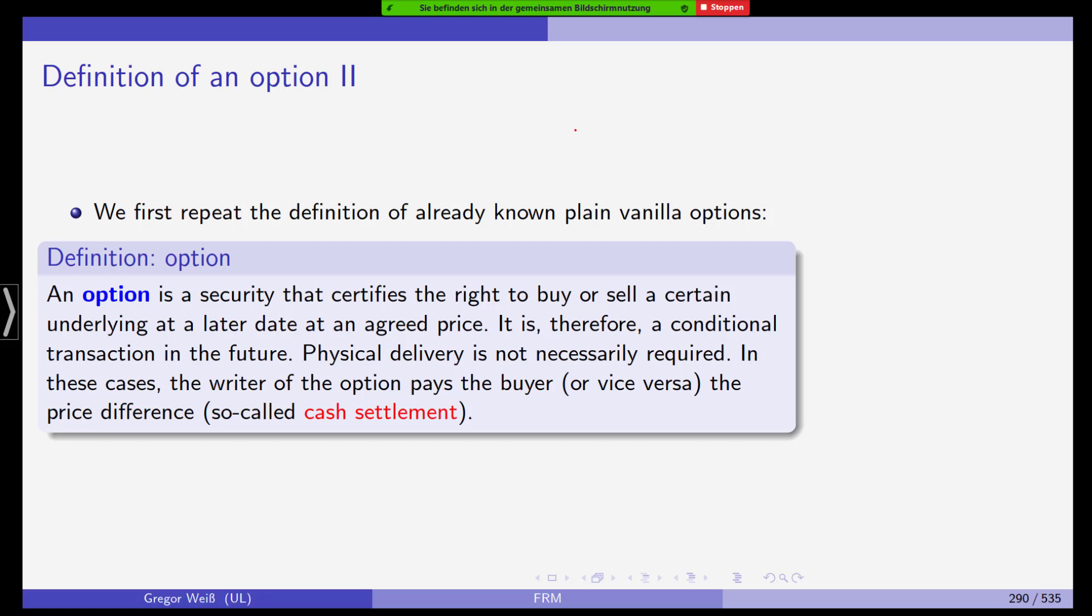Now, what is an option? We first repeat the definition. An option is a security that certifies the right to buy or sell a certain underlying at a later date at an agreed price. Thus, it's a conditional transaction in the future. It depends on whether you want to exercise your option. And physical settlement is usually not required. In most cases, rather than physical settlement, we have so-called cash settlement, when the writer of the option pays the buyer, or vice versa, the difference in price at maturity when the option is exercised.